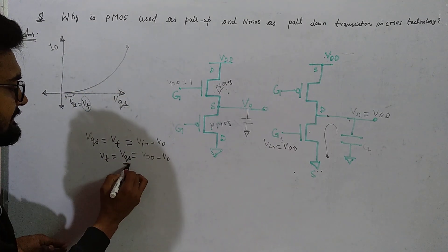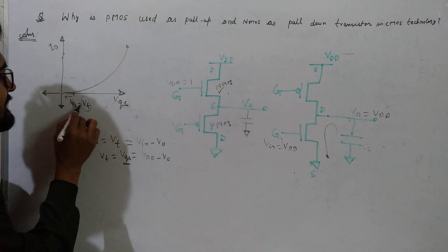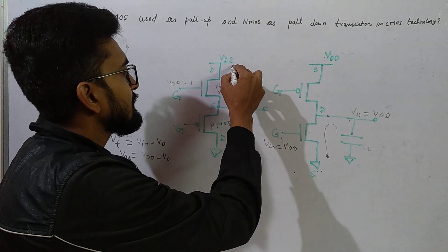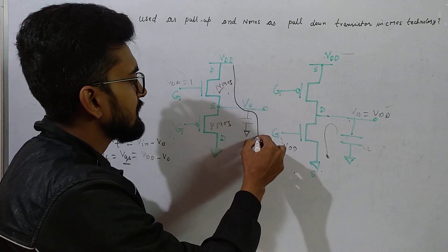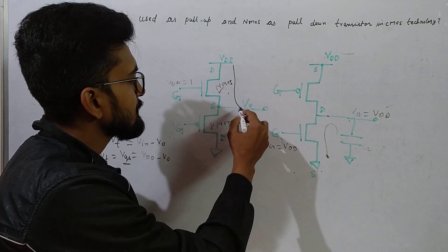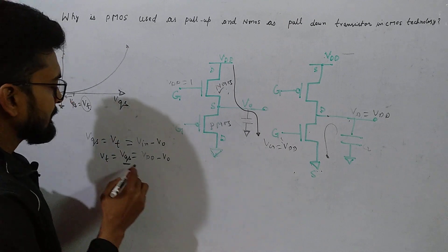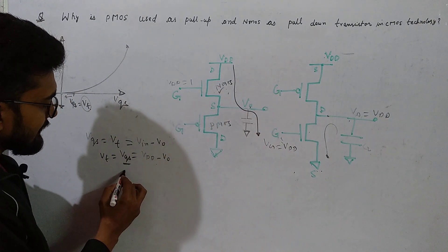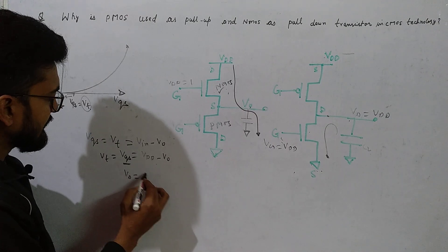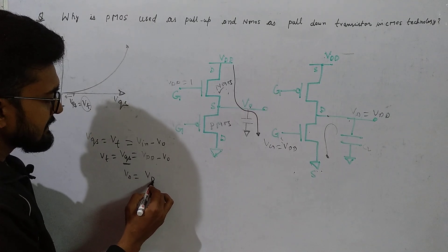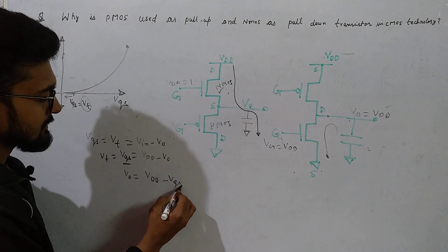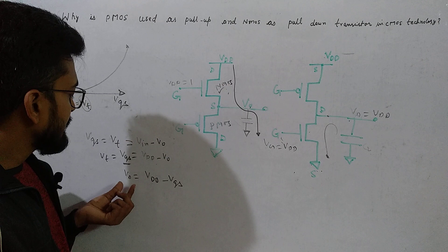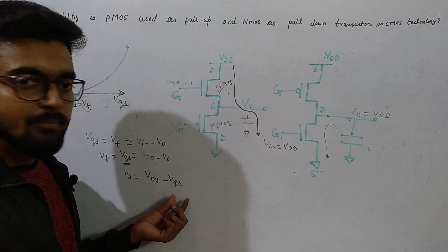When VGS equals VT, the NMOS transistor is on and the capacitor starts charging through this path from 0 to the value equal to V output. The output can be deduced as VDD minus VGS. When VGS equals VT, we get the output voltage as VDD minus VT.